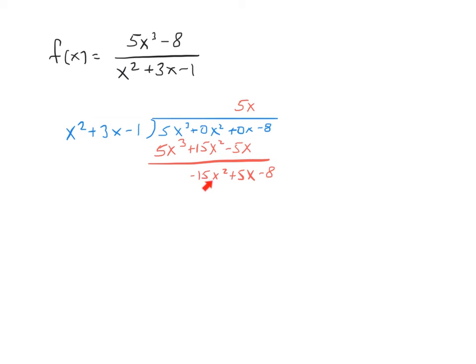Divide again. Negative 15x squared divided by x squared is negative 15. Multiply. We get negative 15x squared minus 45x plus 15. And subtract.